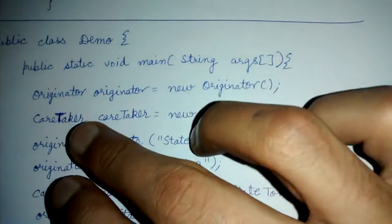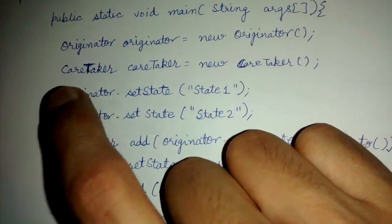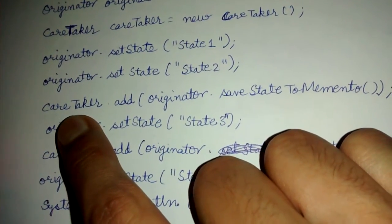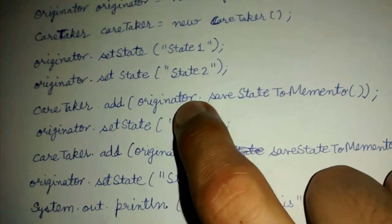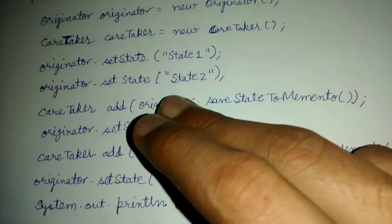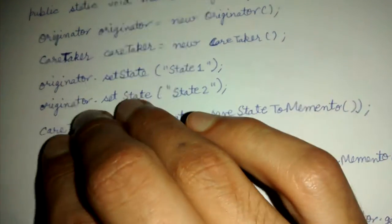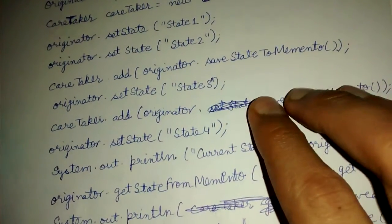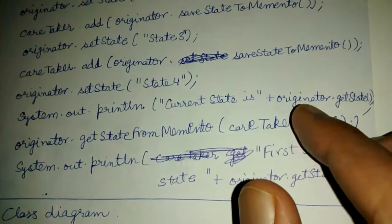Let's see the demo class which uses all these objects. We create a new originator and a new caretaker. We set the state of the originator as state one, then change the state to state two. Then we save the current state of the originator by calling originator dot save state to memento, which returns a memento object representing the current state, and we add it to the list.